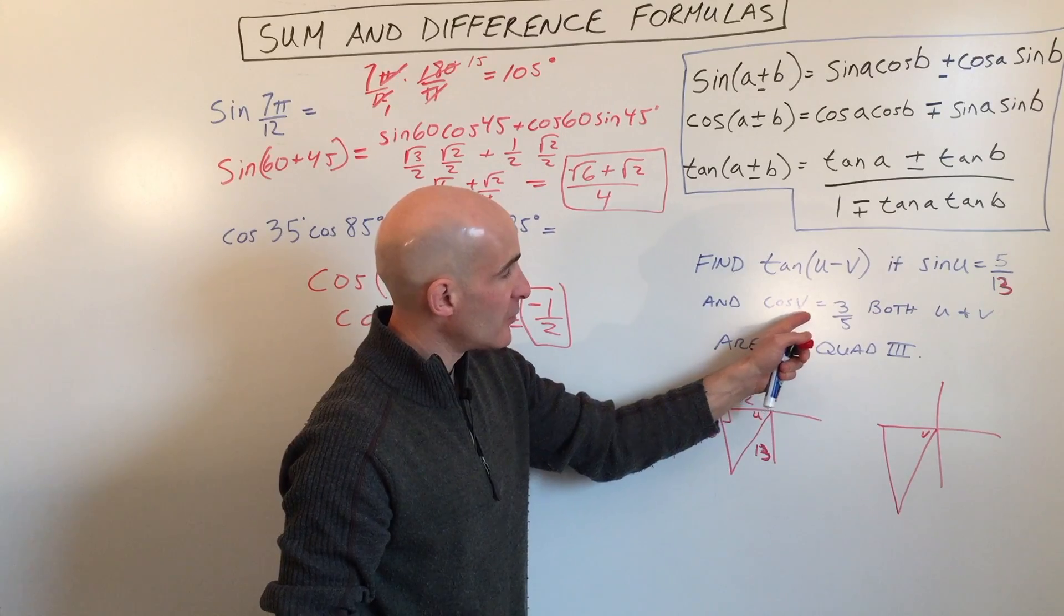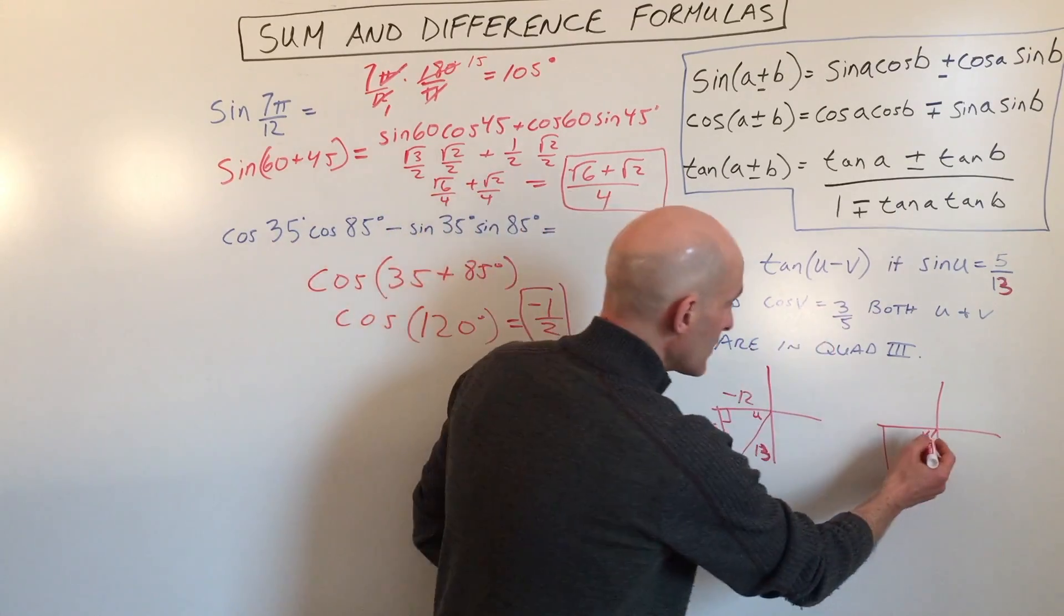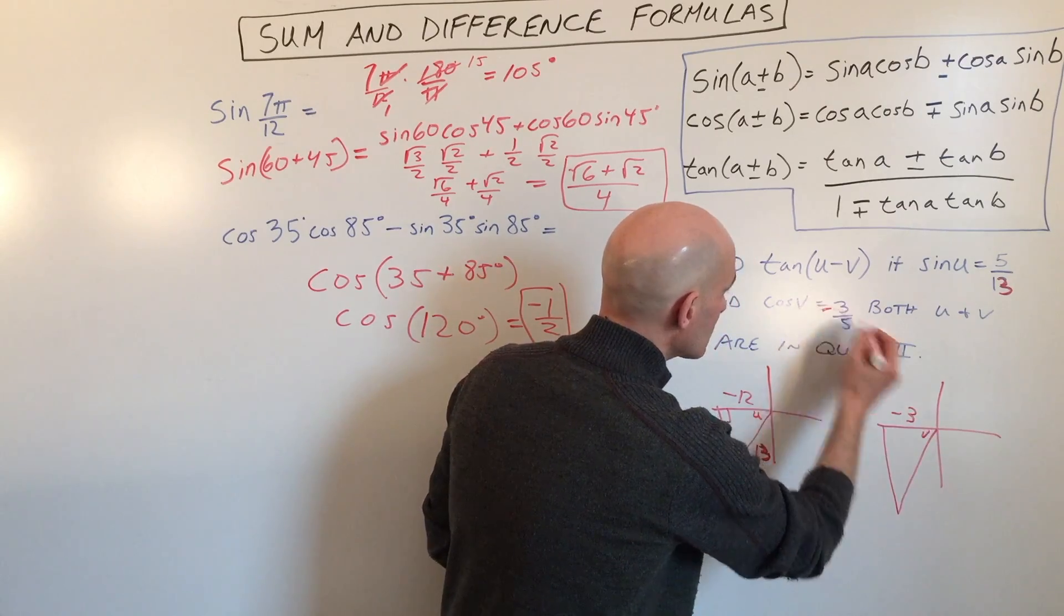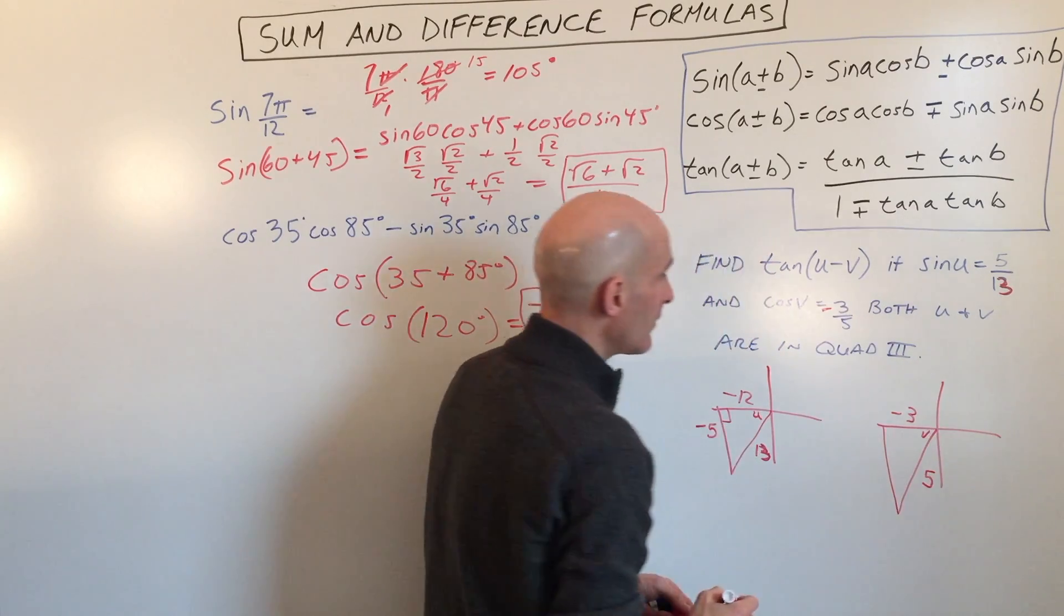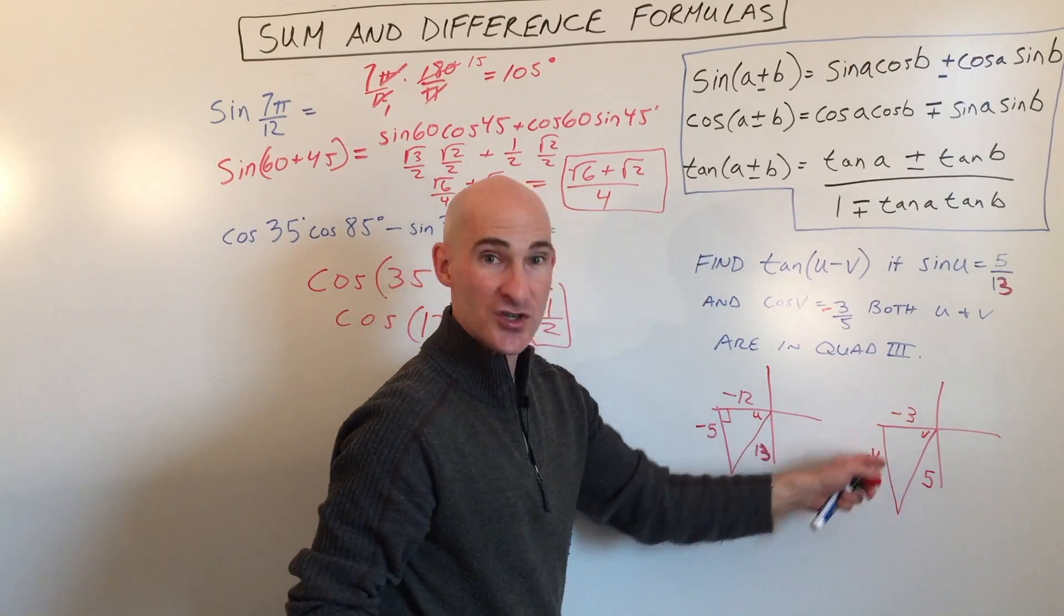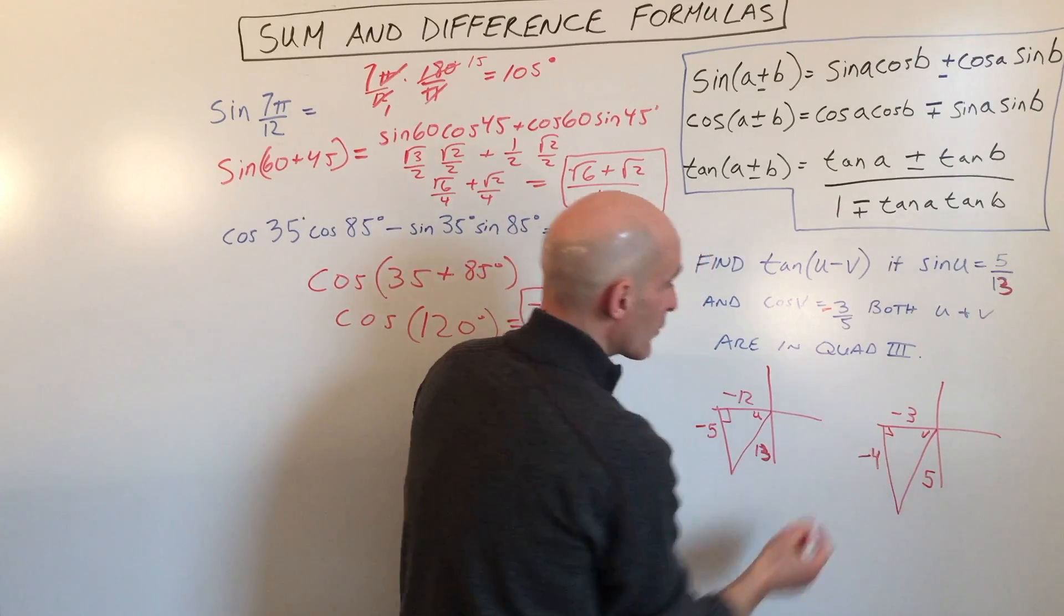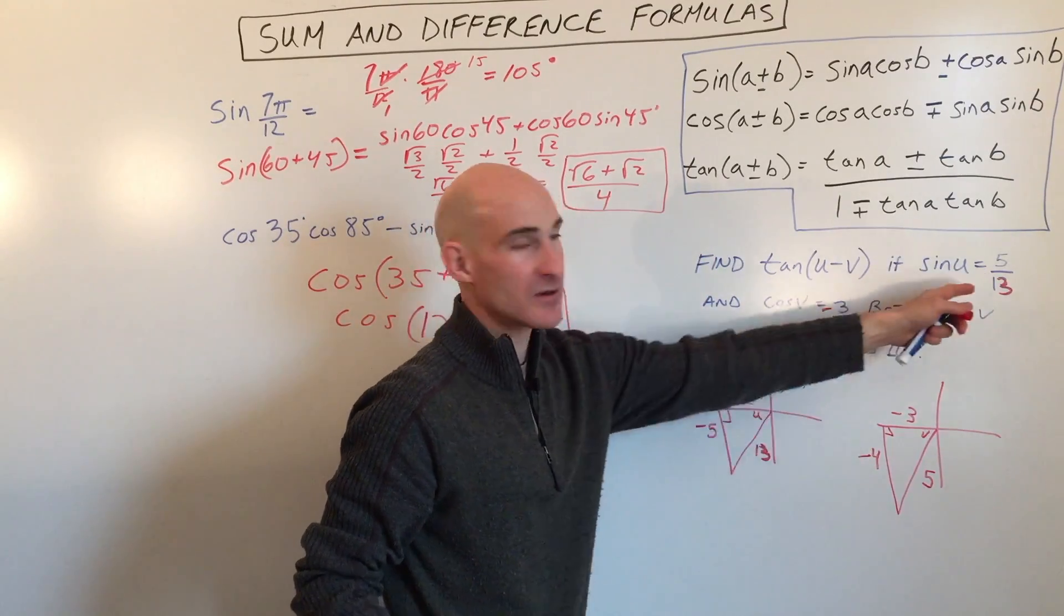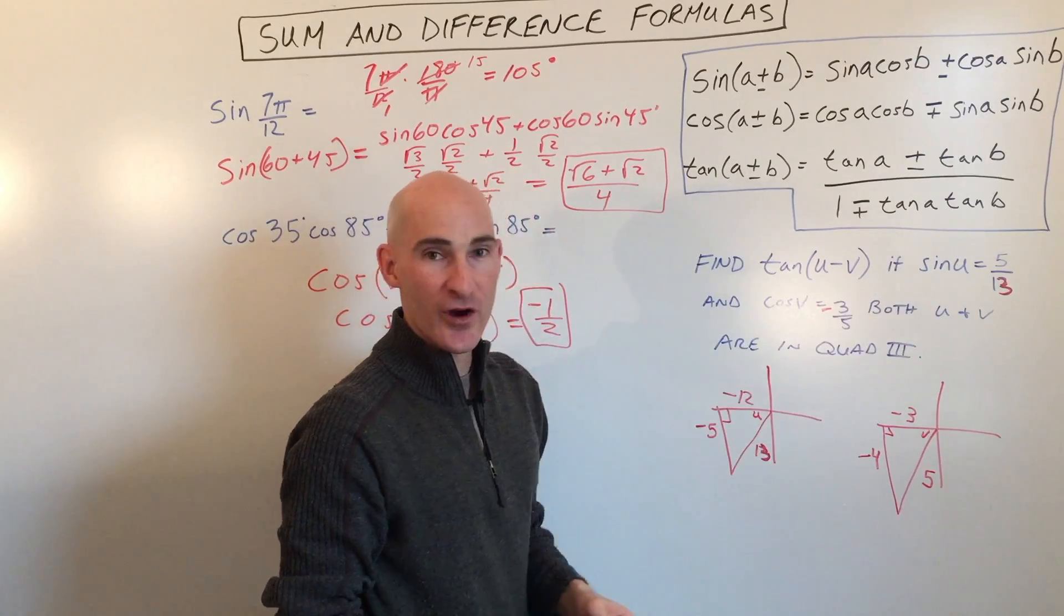For this one, cosine of angle v, we have 3 fifths. So cosine is adjacent over hypotenuse. So if we solve for the missing side, this is going to be negative 4, just using Pythagorean theorem. So there we go. So there's our two triangles. I had to adjust these a little bit to make the numbers work out a little bit easier for our example.